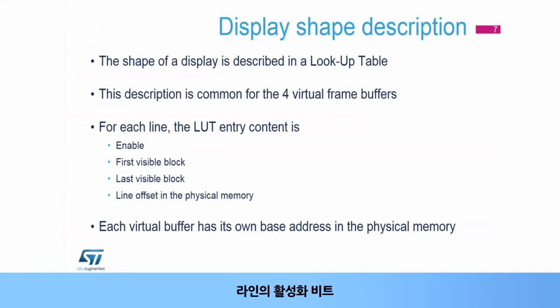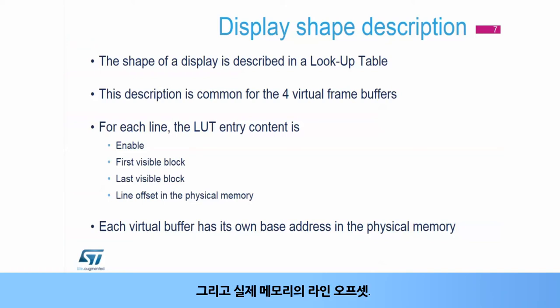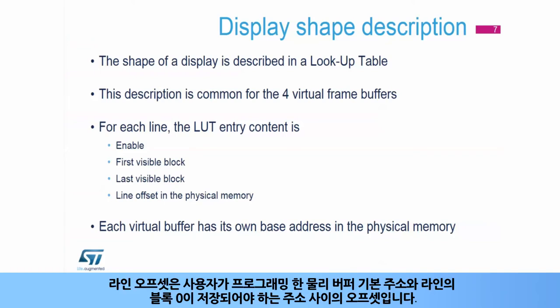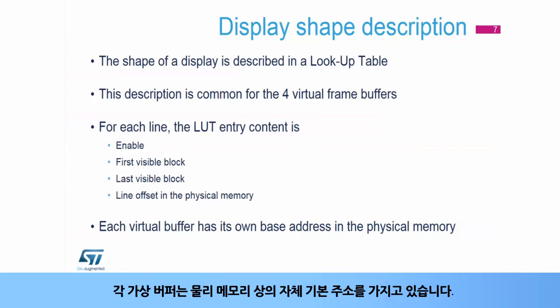For each line, the following parameters are stored: the enable bit of the line, the number of the first visible block, the number of the last visible block, and the line offset in the physical memory. The line offset is the offset between the physical buffer base address programmed by the user and the address where block 0 of the line has to be stored. Each virtual buffer has its own base address in the physical memory.